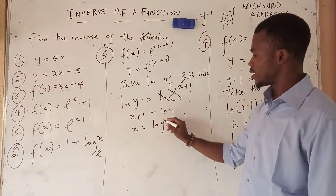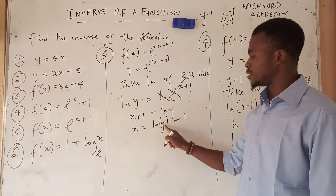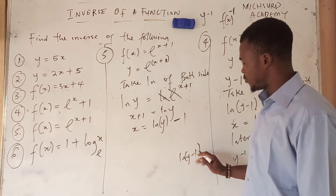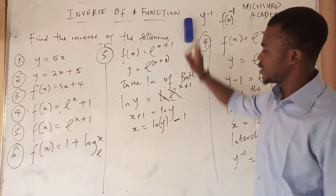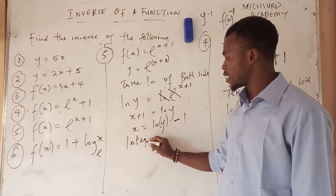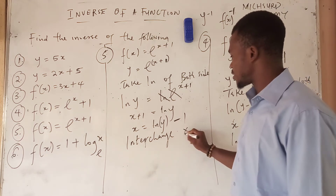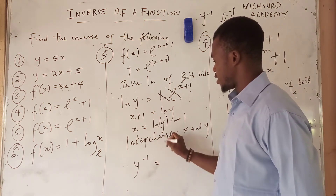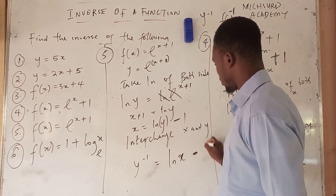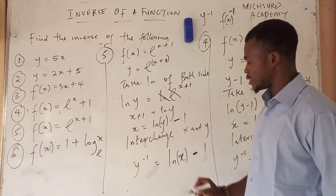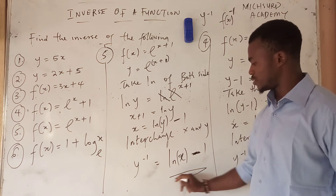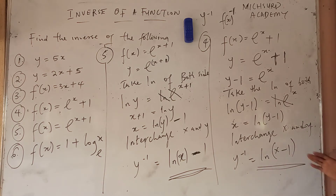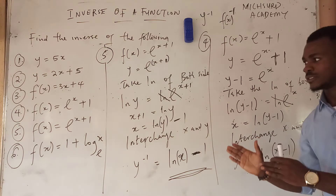It would be better to put a bracket so you write ln(y) clearly — to show that the ln function applies to y only and not to the minus 1 that follows. Now we move the 1 over: x is equal to ln(y) minus 1. We then interchange x and y, giving the inverse y⁻¹ is equal to ln(x) minus 1. So you can see the results of question 4 and question 5 are not the same — you have to be careful when given such a question.